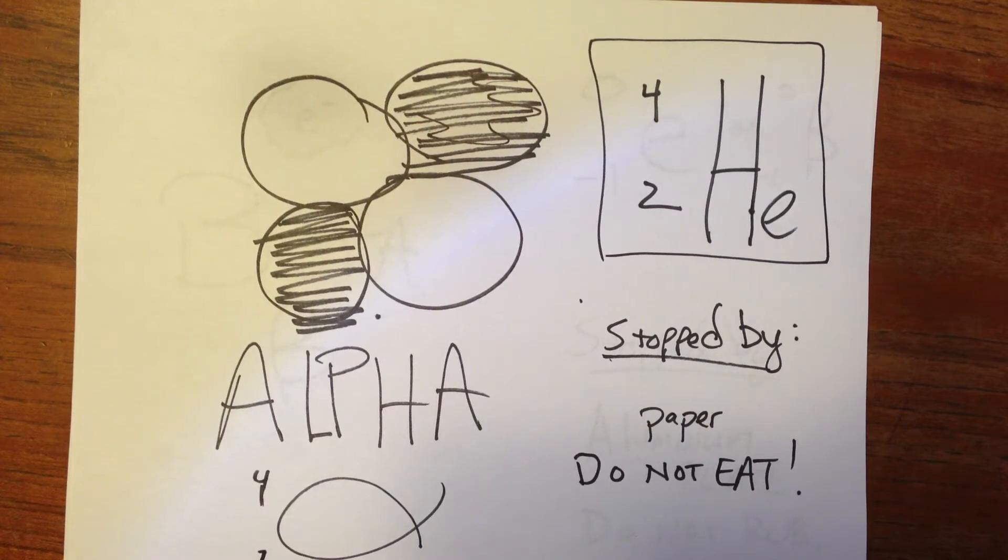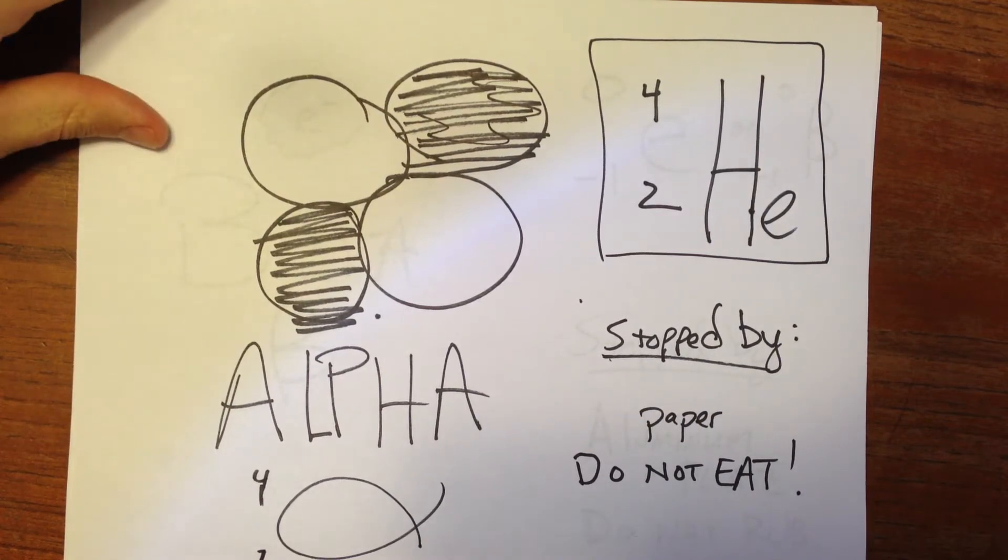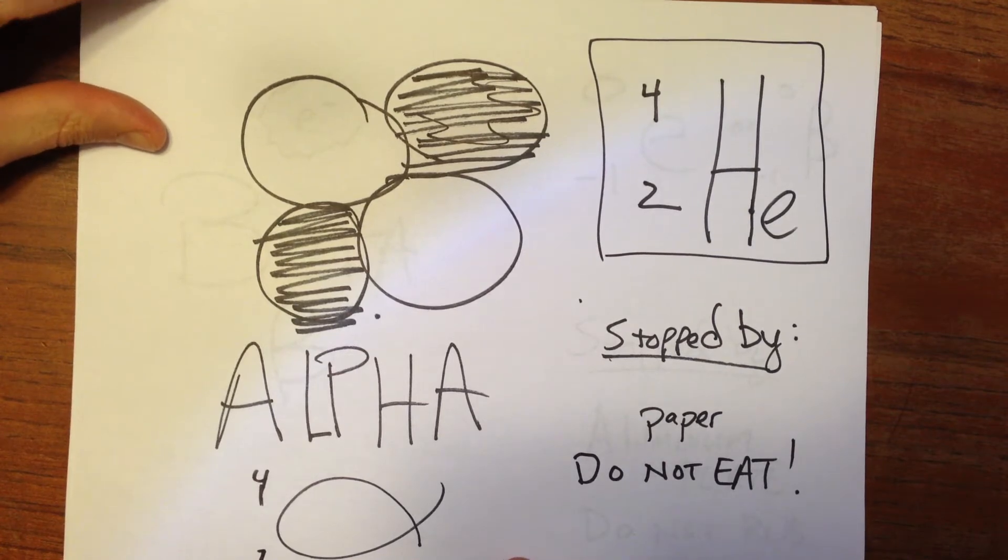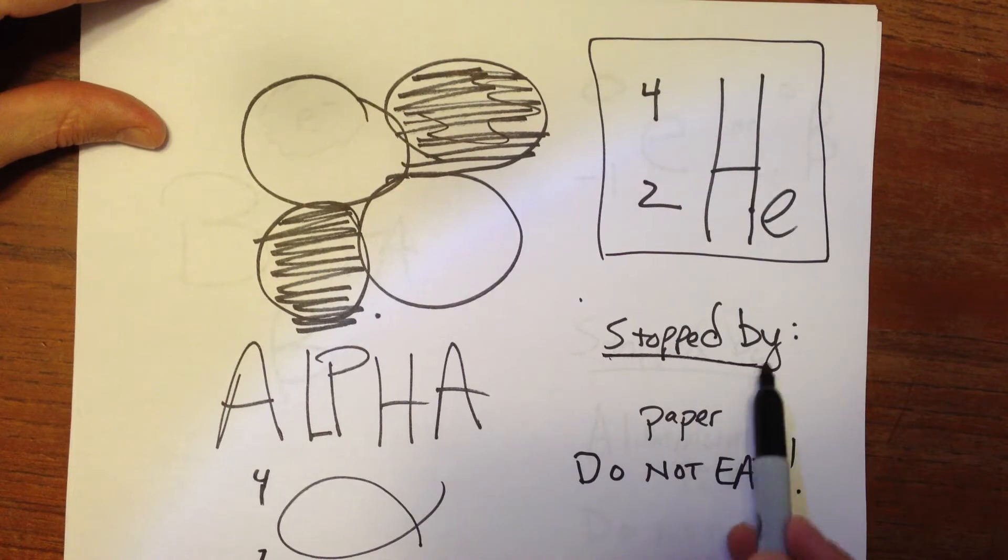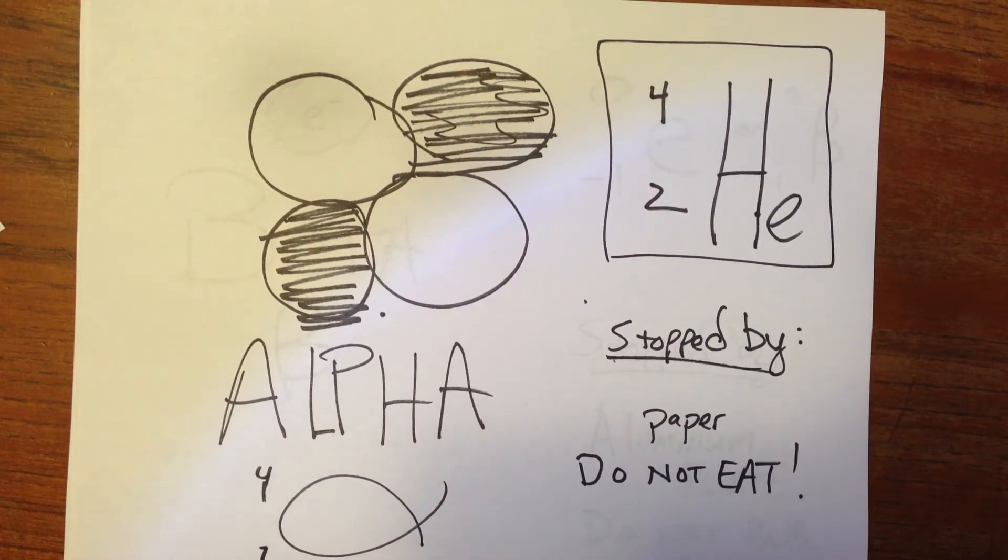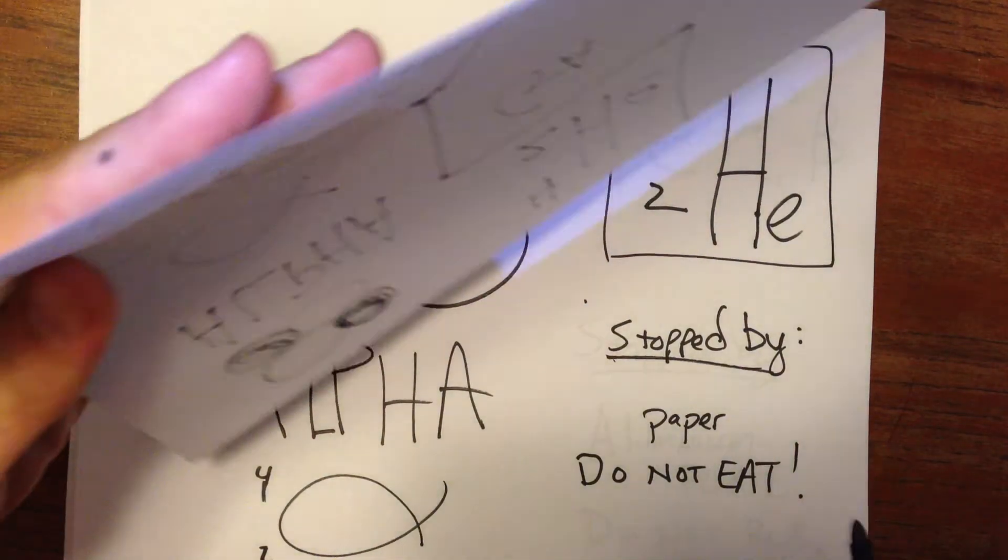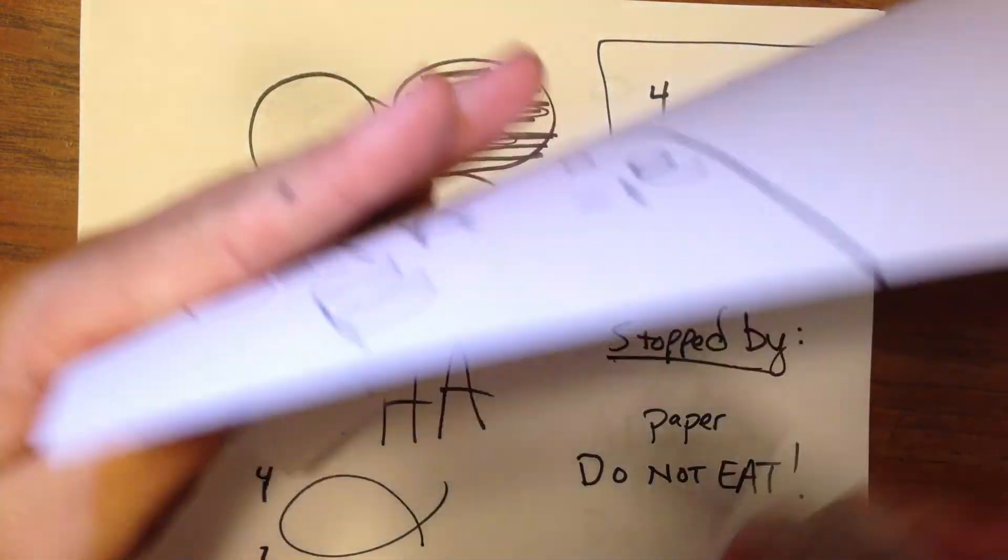And to understand about each of these different kinds of particles, first the alpha particle, as we talk about it, it can be stopped by a piece of paper. So if I have an alpha particle coming through here, and it wants to get through, paper is going to stop it.